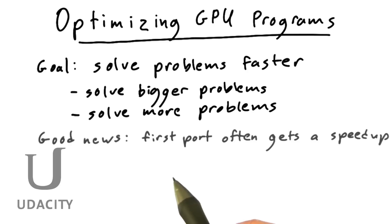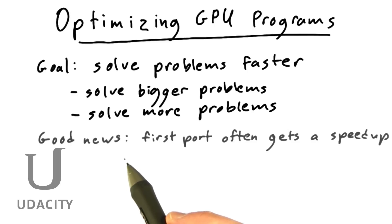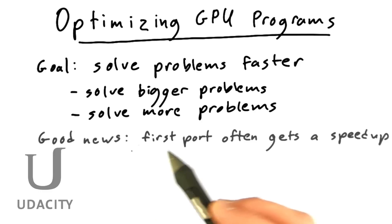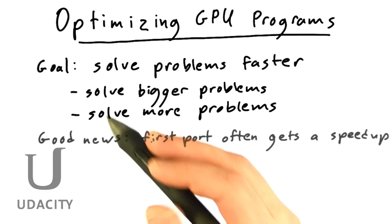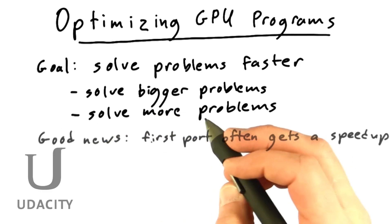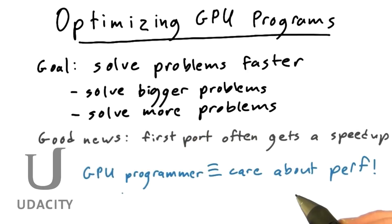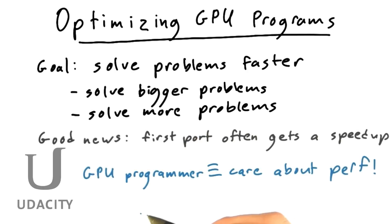So if you have a naturally parallel problem, it's often the case that that first initial CUDA port will get you a good speed up, and that's cool. But by definition GPU programmers care about performance — that's why they're using the GPU. That means they often want to spend additional effort to maximize the speed up beyond that first initial try.